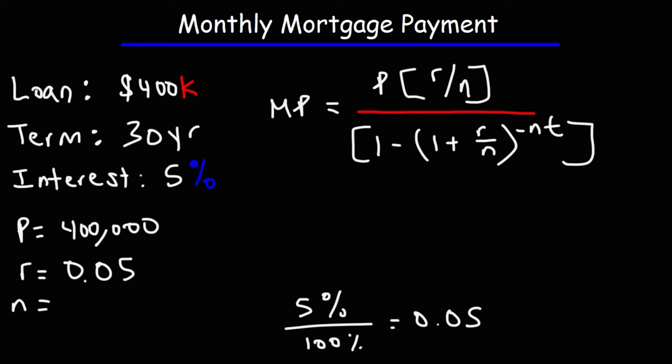N is the number of payments made every single year. Since we're trying to calculate the monthly payment, and there's 12 months in a year, it's going to be 12.